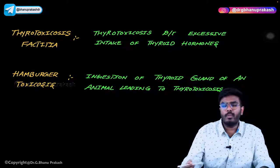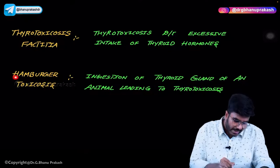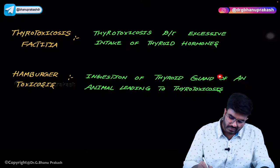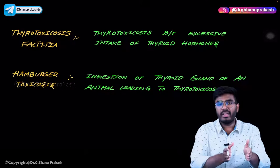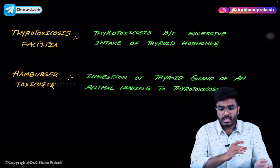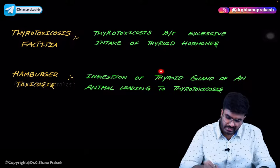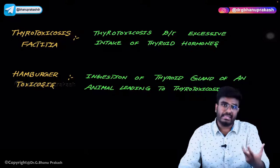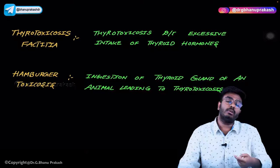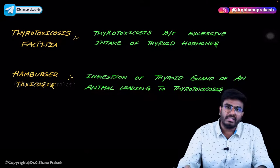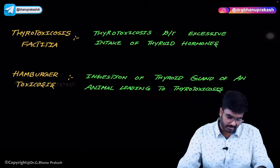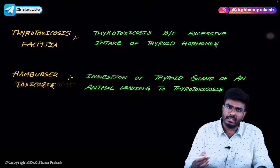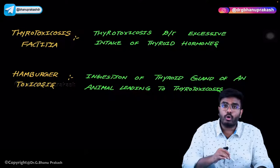One variant of thyrotoxicosis factitia is hamburger toxicosis. Hamburger toxicosis is due to ingestion of a thyroid gland — certain groups, especially from South American countries, include cattle thyroid gland in their diet. Consuming the thyroid gland of cattle introduces excessive T3/T4 into the body, causing symptoms. This is called hamburger toxicosis — a condition where ingestion of a thyroid gland of an animal like cattle or sheep leads to thyrotoxicosis.